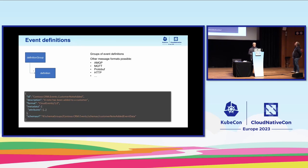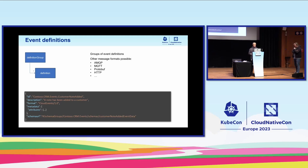Event definitions can be summarized in a definition group. As mentioned, this context or group can mean many things — it's up to you. The rough structure of a definition has expected attributes like id and description, but also a format field — here it says CloudEvents, but this can also be used for people who use plain messaging protocols like AMQP. There are already some definitions for other plain messaging formats. You also see an attribute section and a link to a schema.